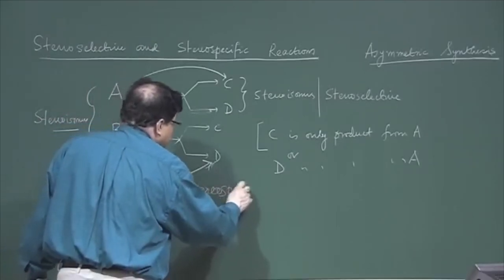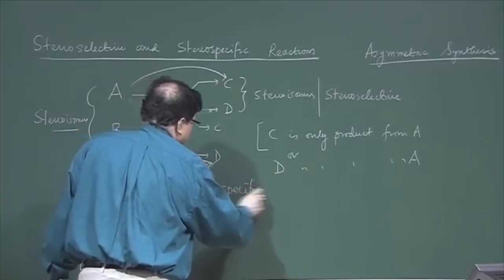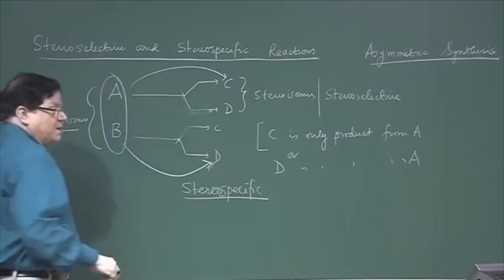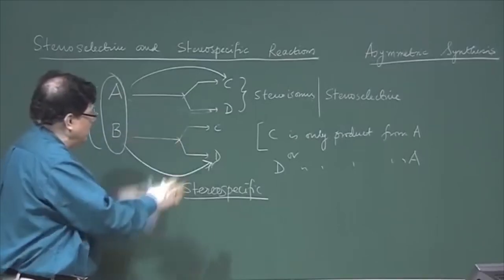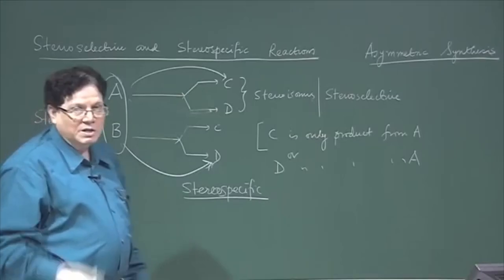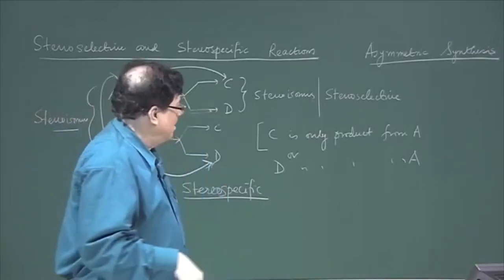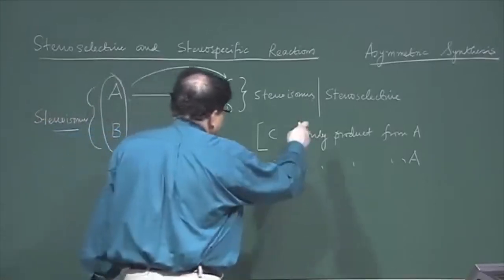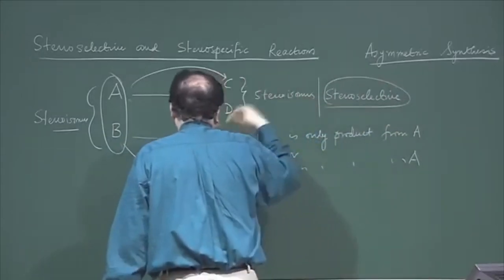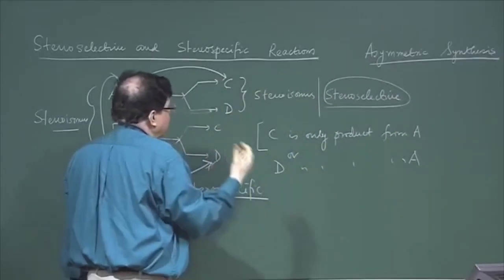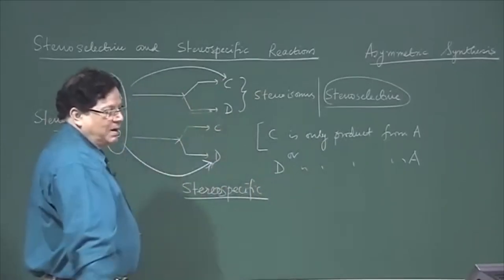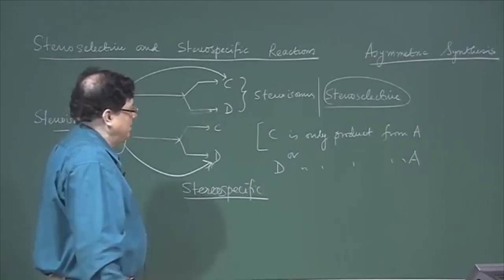If that happens, then that is called a stereospecific reaction. A stereospecific reaction points to the stereochemistry of the starting materials, because the product formation depends on the stereochemistry or geometry of the starting material. On the other hand, stereoselectivity is dependent on just the number of products that you are getting in the reaction — if one product is obtained, the reaction becomes stereoselective.